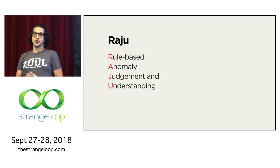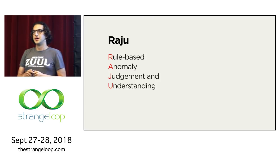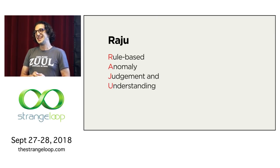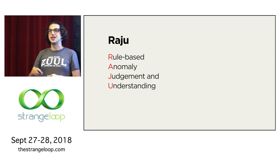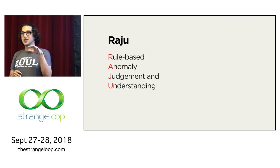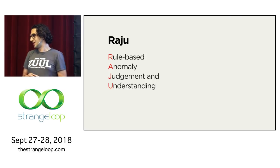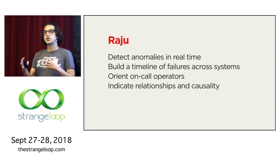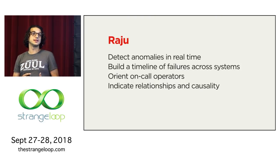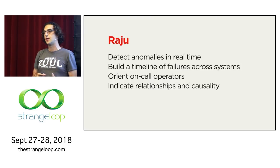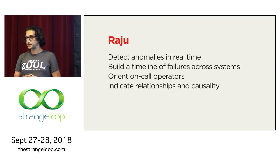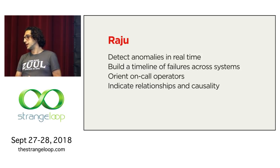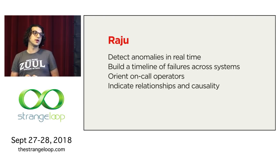We named our anomaly detector Raju — it's named after a former colleague who was famous at the company for being so in tune with every metric that he could just jump in and figure out what's going on. These alerts can pinpoint which system is in trouble, when, and create a timeline of events that helps us figure out which system is the root cause. We were blown away by the results. Our team used to get 10 pages a week — now we're down to about one page a week or less. That's a huge improvement.